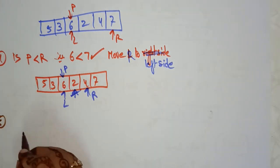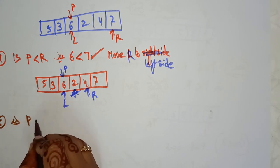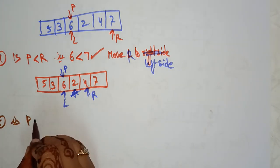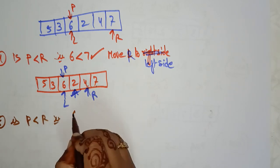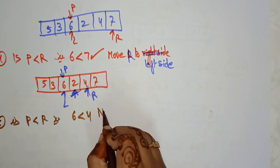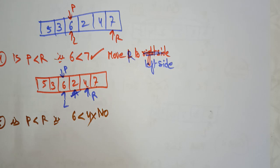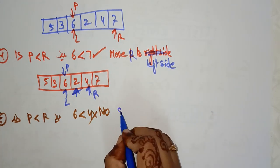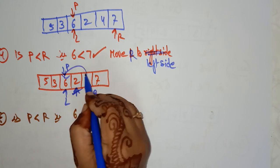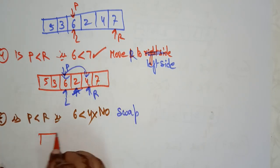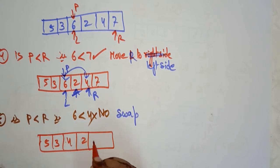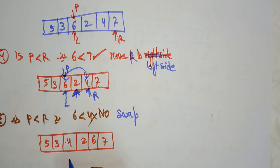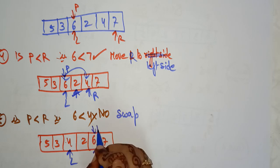Case 5. Check: is pivot less than R? Is 6 less than 4? No. Condition violates, so swap P with R. After swapping you get 5, 3, 4, 2, 6, 7. Now L is here, R is here, and the pivot is 6 at its new position.